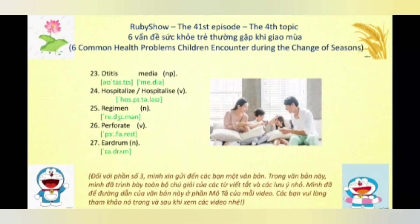Từ số 25, chúng ta có danh từ là 'regimen.' Ngoài ra từ này còn có một cách đọc khác là 'regimen.' Và cả 2 cách này thì đều nhấn ở âm 1. Danh từ này có 3 nghĩa: nghĩa số 1 là chế độ ăn uống hoặc chế độ dinh dưỡng hoặc phác đồ trong y học; nghĩa số 2 là quan hệ chi phối giữa các từ trong ngôn ngữ học; và nghĩa số 3 là chế độ hoặc chính thể.